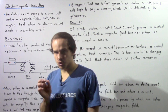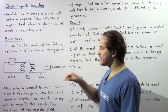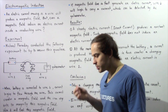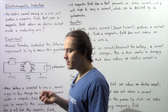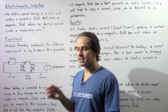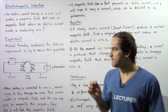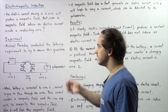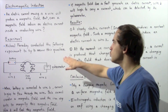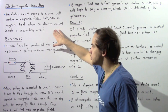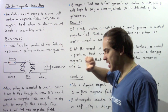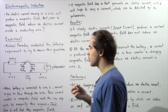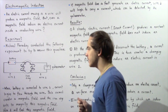To answer this question, we're going to examine an experiment that was actually conducted by an English scientist by the name of Michael Faraday. Michael Faraday conducted this experiment to try to answer whether a magnetic field can induce an electric current inside a conducting wire.